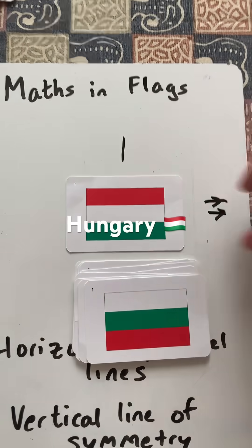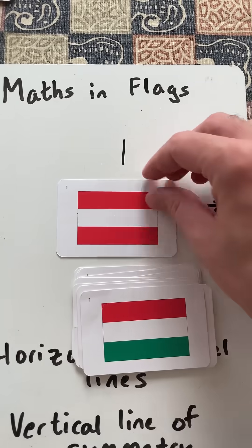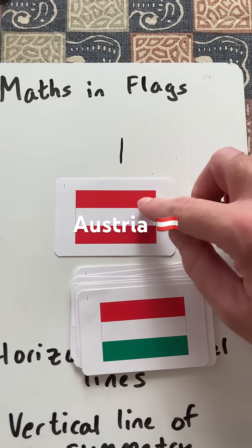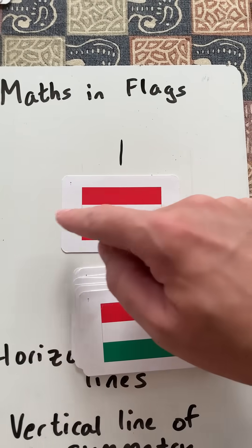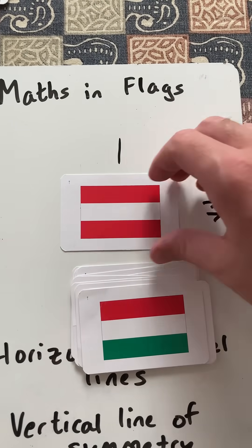Other flags that have similar design with horizontal lines of symmetry include Austria, but this time it has two colours, so it also has a horizontal line of symmetry. So it could be folded that way or that way.